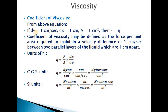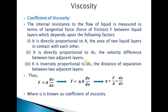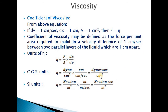From this equation, if dv = 1 cm/s, dx = 1 cm, and A = 1 cm², then the force of friction equals the coefficient of viscosity η. So η can be defined as the force per unit area required to maintain a velocity difference of 1 cm/s between two parallel layers of liquid that are 1 cm apart.